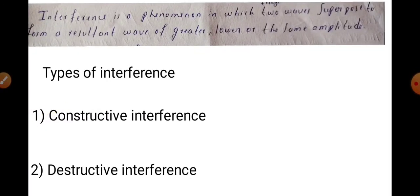Interference is a phenomenon in which two waves superpose to form a resultant wave of greater, lower, or the same amplitude. There are two types of interference: the first one is constructive interference and the second one is destructive interference.